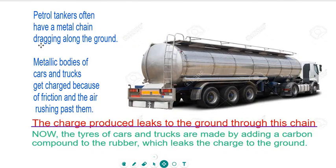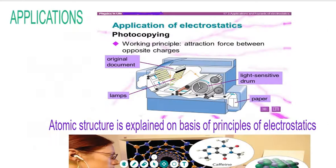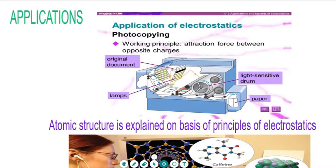If we talk about the applications of electrostatics, the first application we generally see is photocopying. The photocopying machine works on the principle of electrostatics. There is an original document placed here, and a lamp scans this document. Finally, you get the photocopied paper outside after scanning.